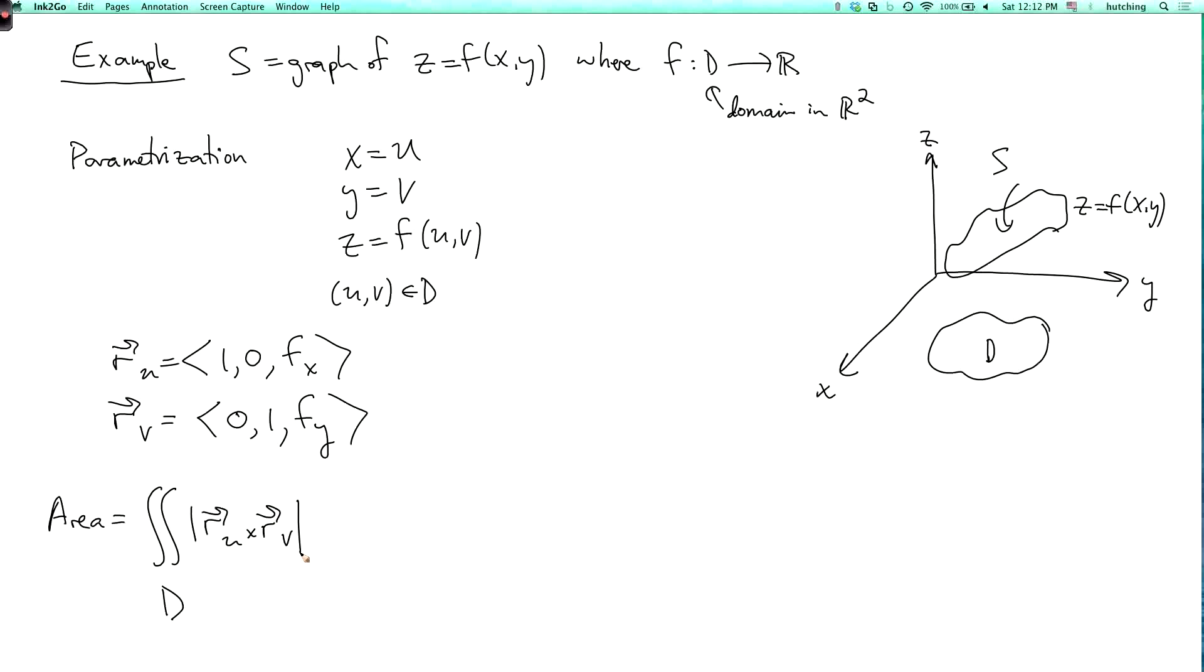And we did this calculation before, but we can do it again here. So r_u cross r_v. So the first component is minus f_x. The second component is minus f_y. And the third component is 1.